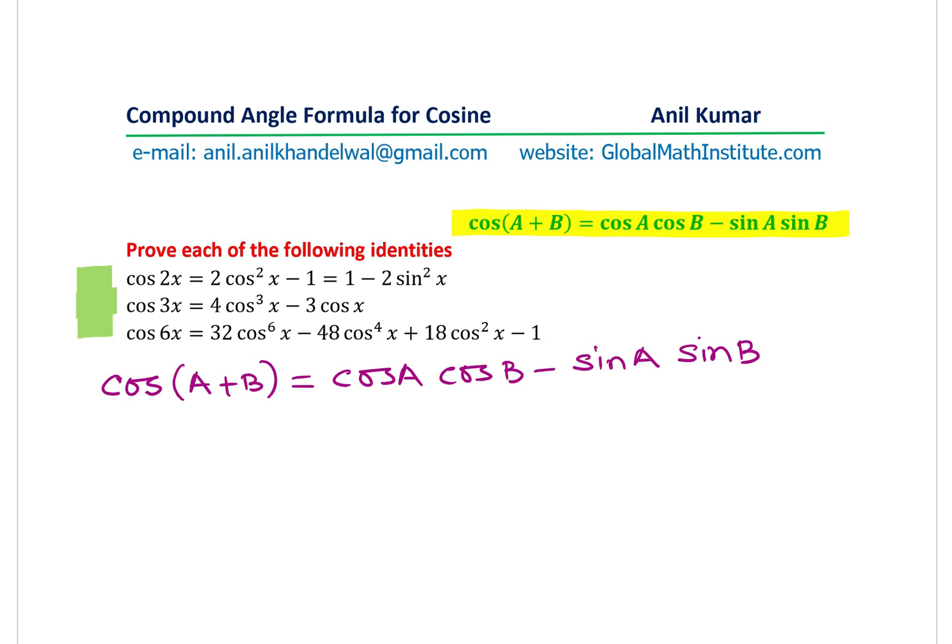Now, to get cos 2x, what do we do? We do a very simple substitution and that is we will substitute, let's say, A equals B equals x. So, in that case, what happens? We get cos(x + x) equals cos x cos x minus sin x sin x. And that is the first formula we actually get, cos² x minus sin² x.